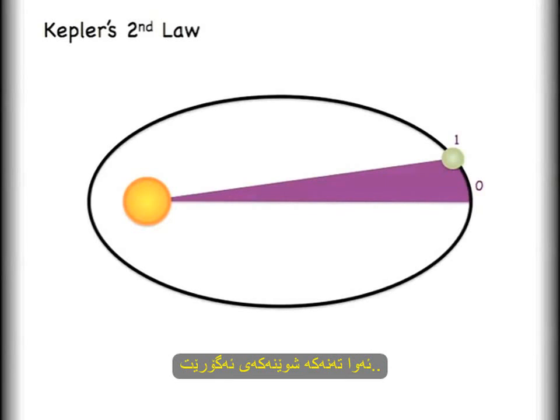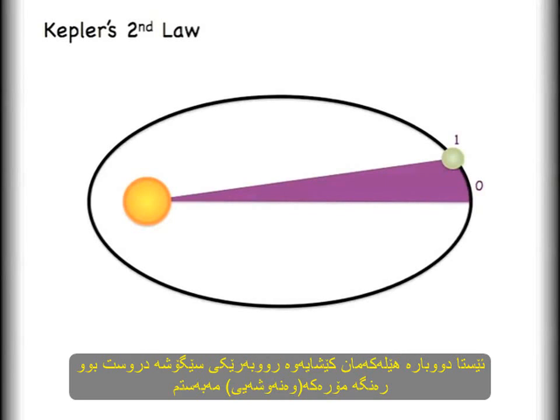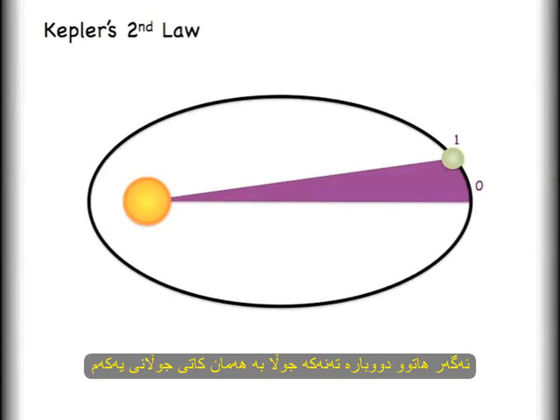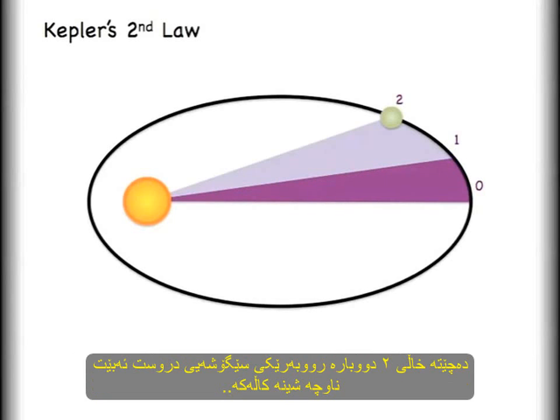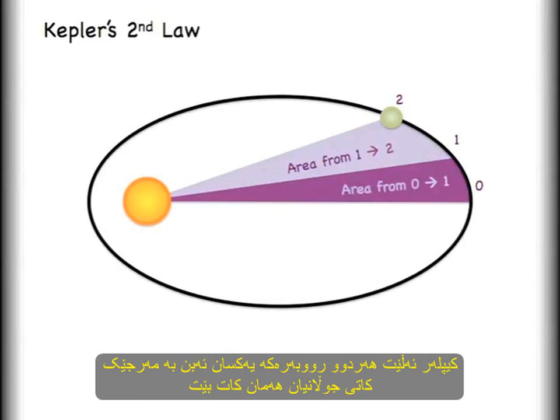We're going to say that the area swept out by that moving line is indicated by the dark purple. We say that that represents one month of time. If I allow one additional month to go by — shown in the light purple — Kepler's second law tells us that the area swept out for both of these time intervals is equal.